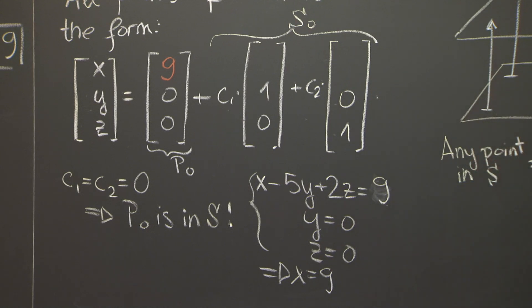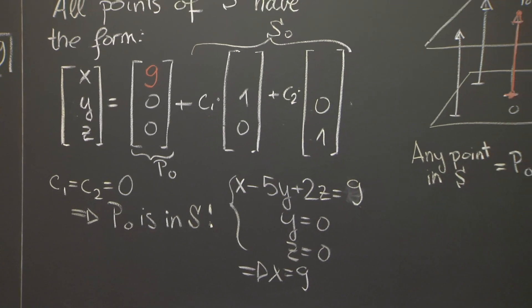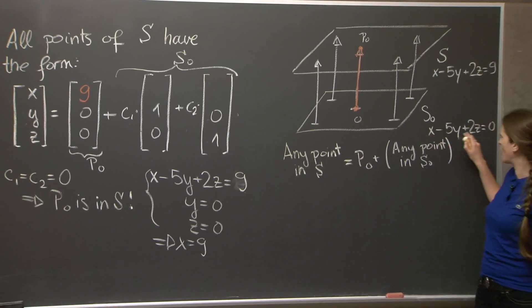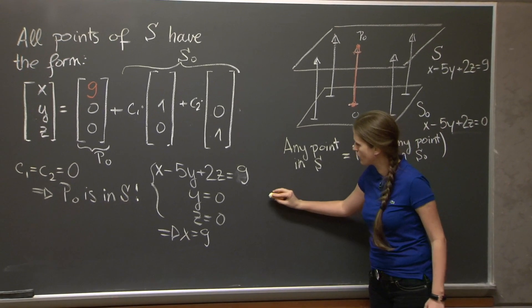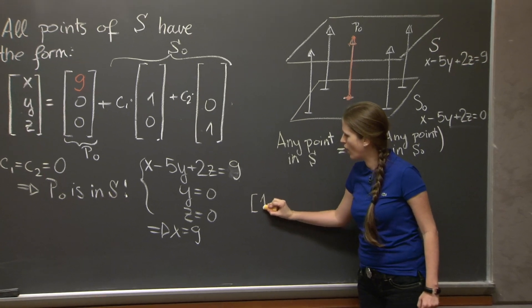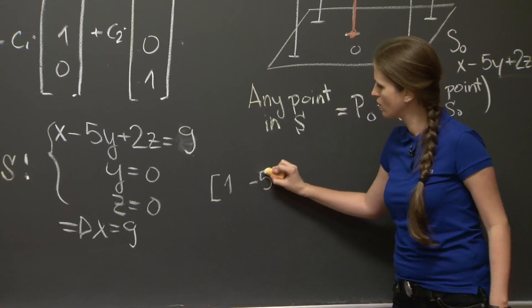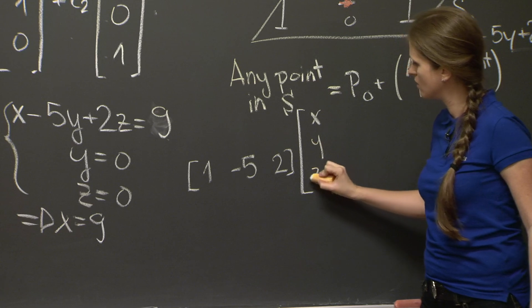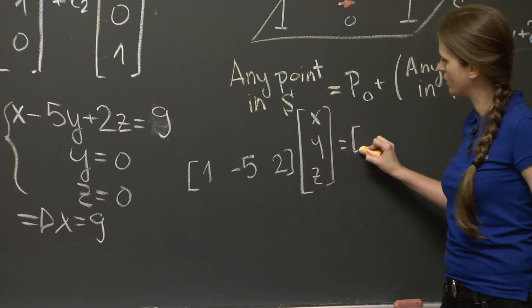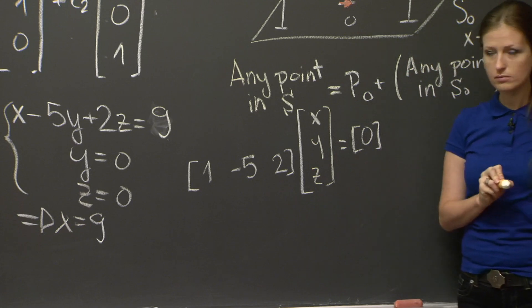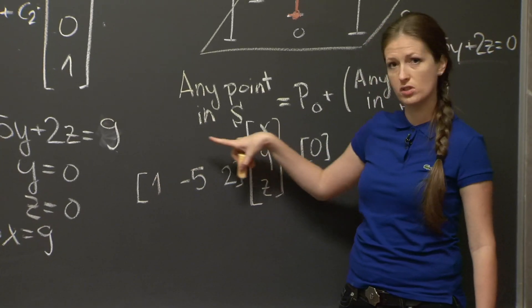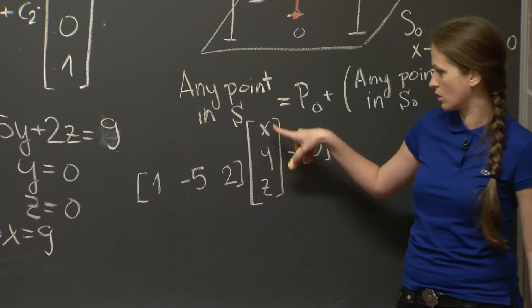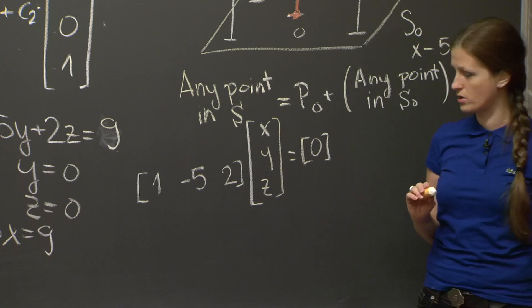Now we're left with a question of how to parameterize all points in S₀. What are all the points in S₀, and what does this problem have to do with solving homogeneous linear equations? Well, let me write this equation of S₀ in a slightly different way. Let me write it as [1, -5, 2] · [x, y, z] = 0. And let me think of this as a matrix of the system. It's a very tiny matrix, but it's a matrix. And think of it as a matrix times vector equals 0, and trying to find all solutions of this system.